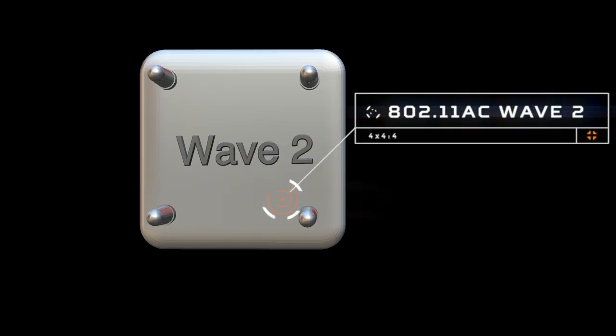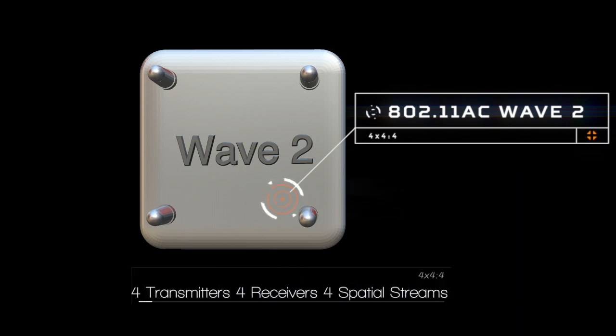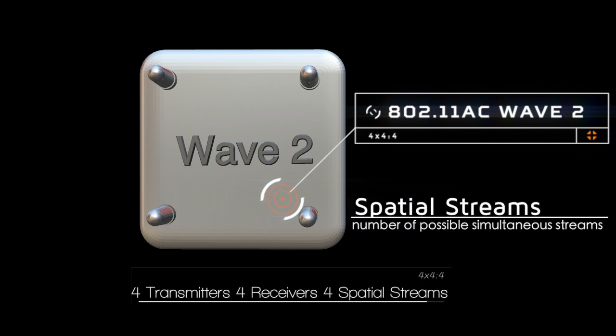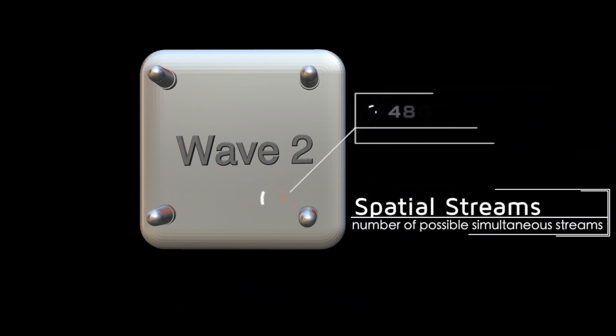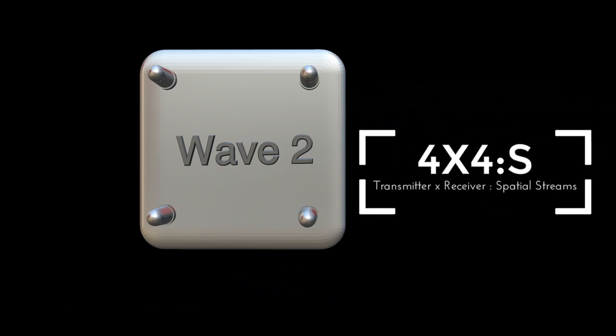Before I begin, it's helpful to understand the key features that maximize multi-user MIMO capabilities. Today's access points can leverage up to four transmitters, four receivers, and four spatial streams, which is the maximum number of clients that is possible within a simultaneous transmission group.